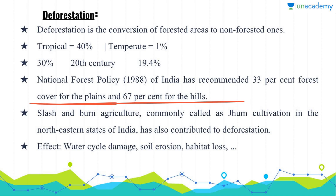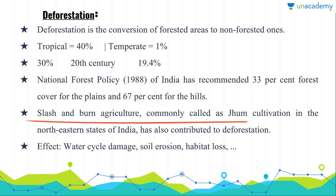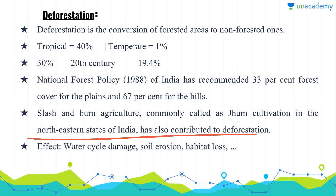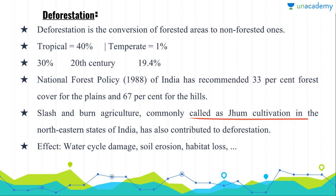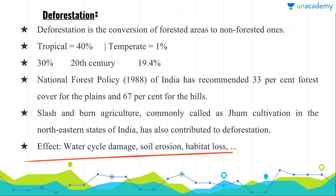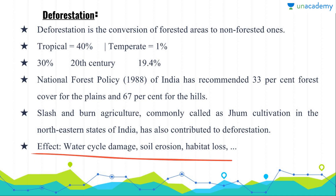In this year the forest cover in India has increased. The slash and burn agriculture, commonly called Jhom cultivation in the north-eastern states of India, has also contributed to deforestation. However, there are some tribal groups who are still doing Jhom cultivation. The effects of deforestation may include water cycle damage, soil erosion, habitat loss, and finally a severe impact on human lifestyle.